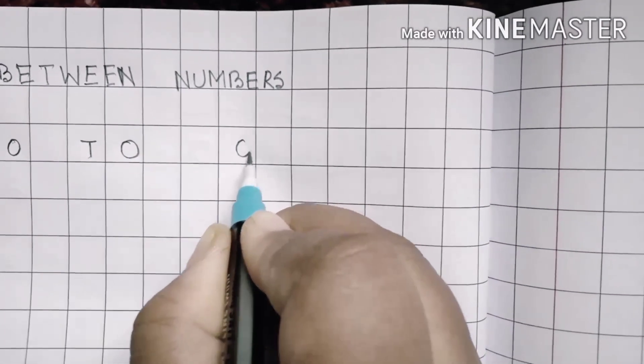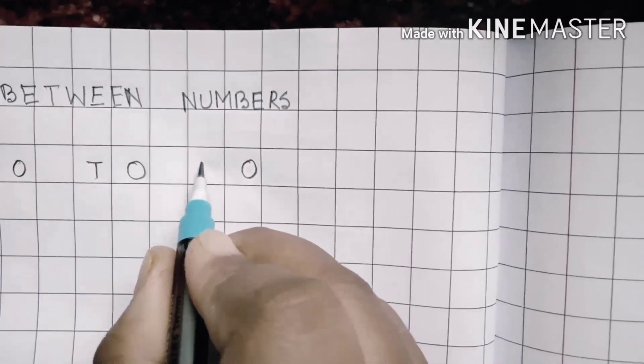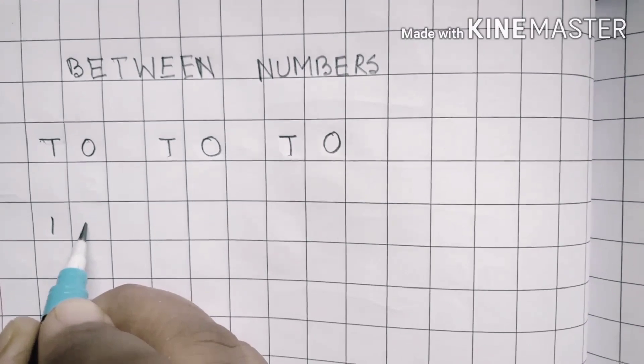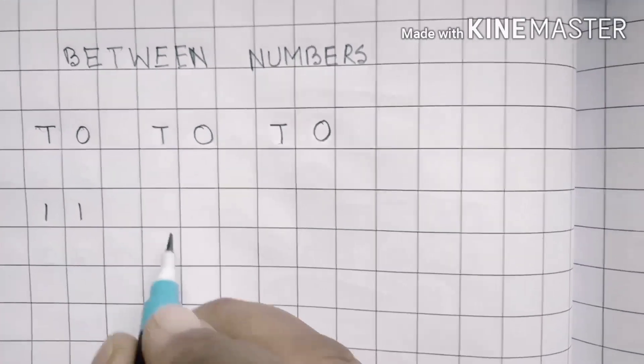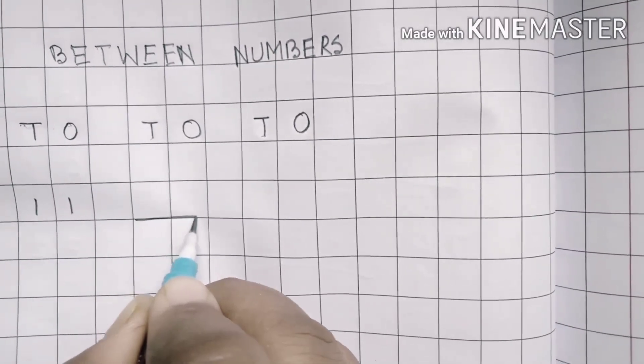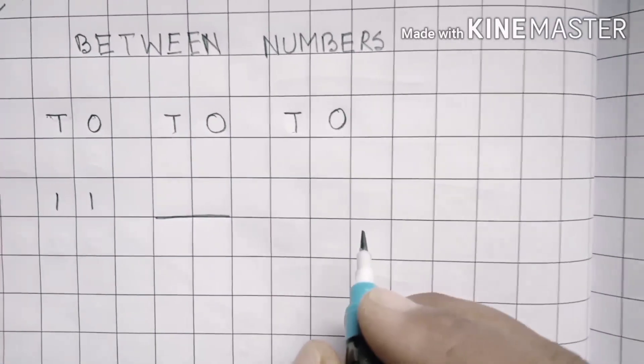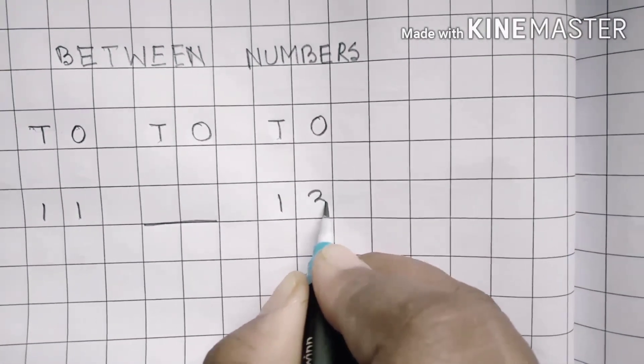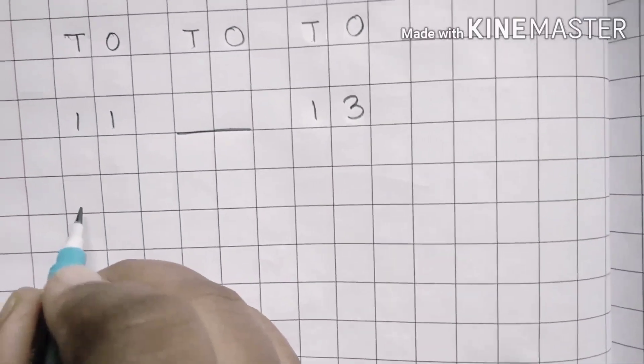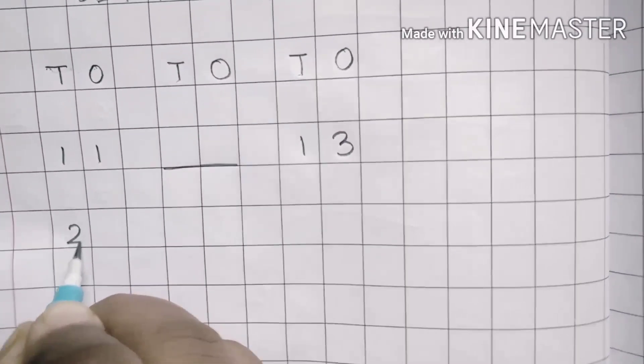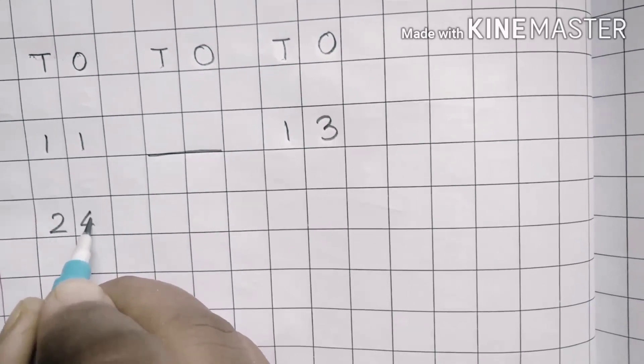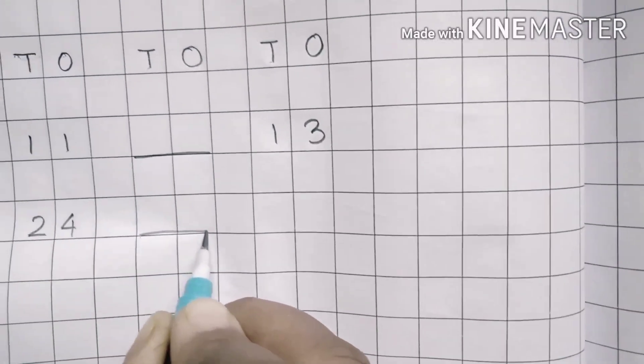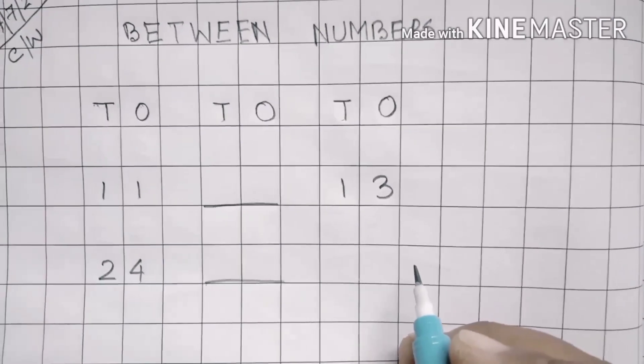Now write the numbers 1, 1 - 11, give a dash, then write here 1, 3 - 13. Now this is 2, 4 - 24, give a dash, then write here 2, 6 - 26. You have to guess which number will come in between.